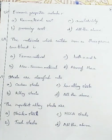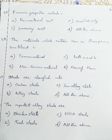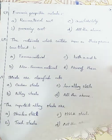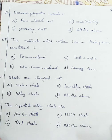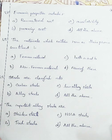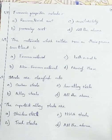Question number 47: economical properties include — Option A: raw material cost, Option B: processing cost, Option C: availability, Option D: all the above. Raw material cost and processing cost are clearly economic. Availability also comes under economic properties because large availability leads to low cost and less availability leads to high cost. So all three come under economic properties — Option D, all the above.